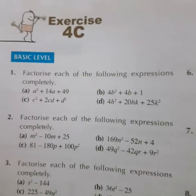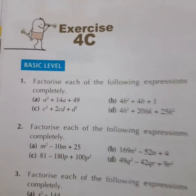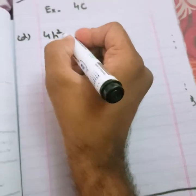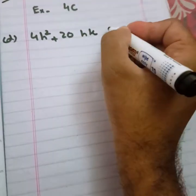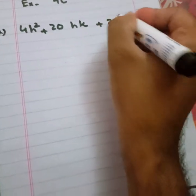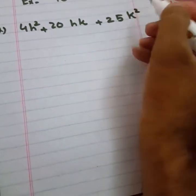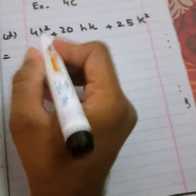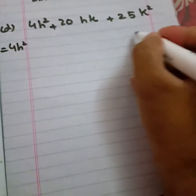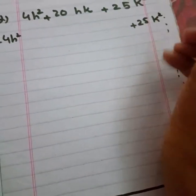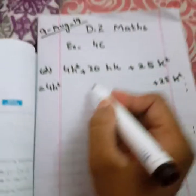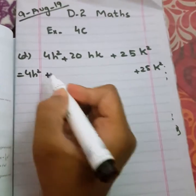Let's write part D: 4h² + 20hk + 25k². 4h² will stay as it is, 25k² will stay as it is, and this plus sign will stay as it is. We will put brackets in place of this 20hk.